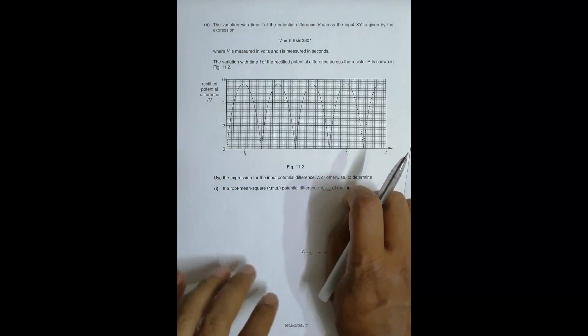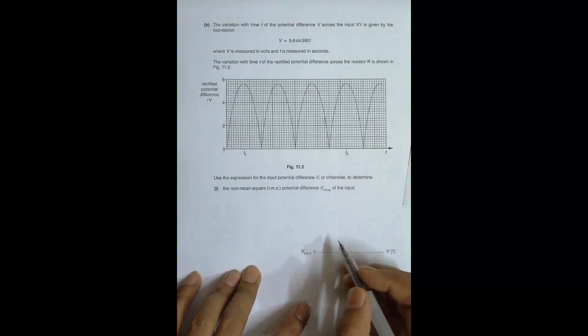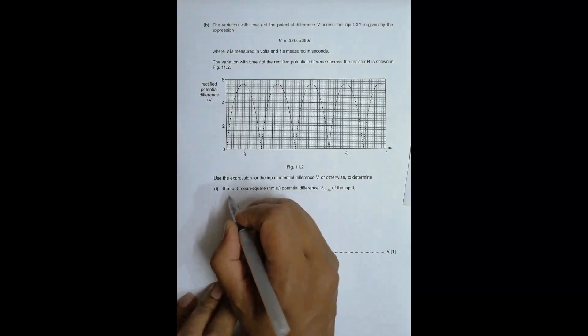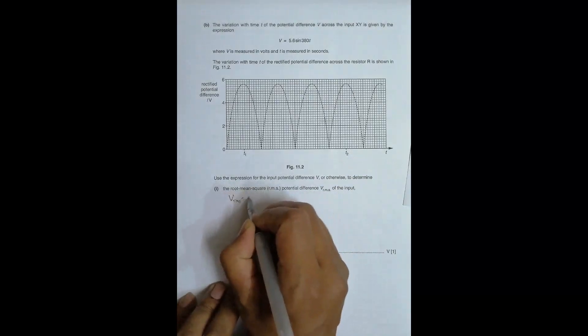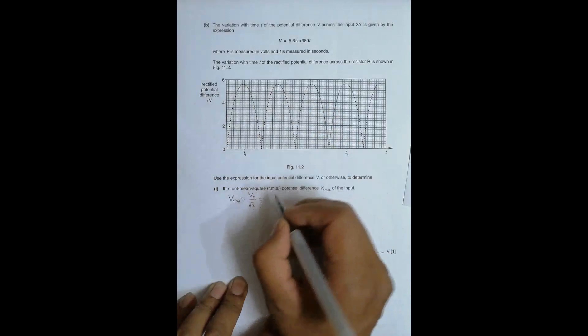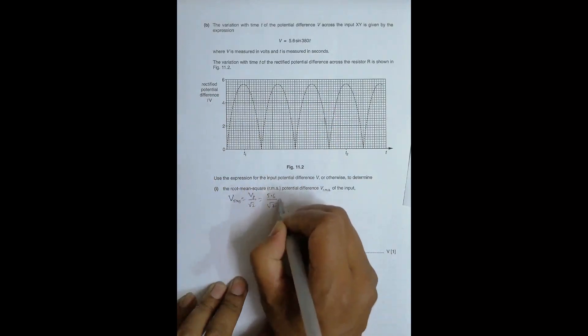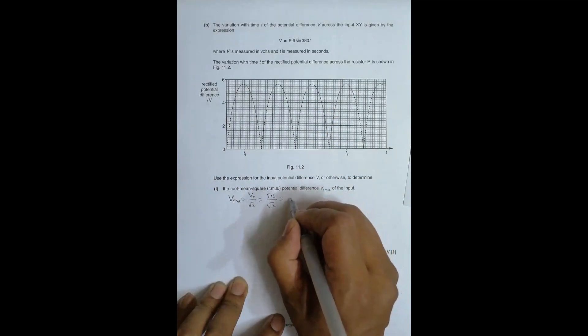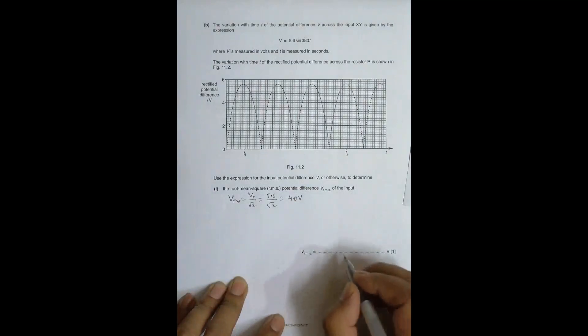Use the expression for the input potential difference V or otherwise to determine the RMS PD. So V_RMS should be equal to V_peak by root 2, and the value of V_peak is 5.6. So 5.6 by root 2, and that becomes equal to 4.0 volt. So V_RMS is equal to 4.0 volt.